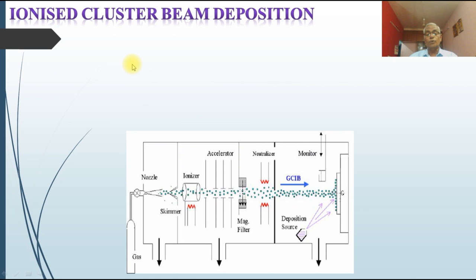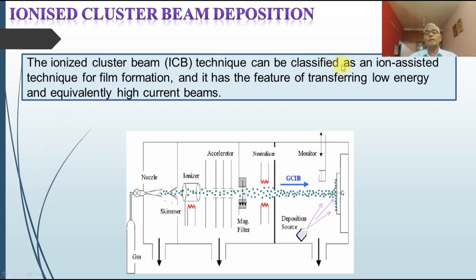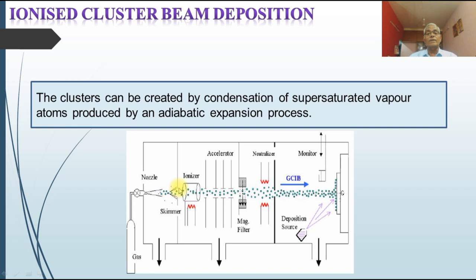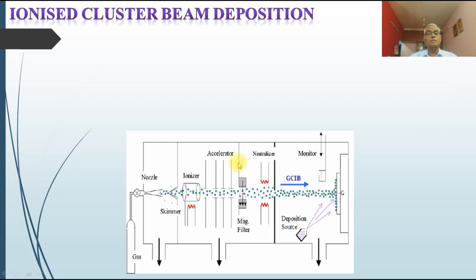The fourth method is ionized cluster beam deposition, which can be classified as ion-assisted film formation. A substrate is used for depositing the film. Gas is allowed to pass through a nozzle, which controls the size of the beam. The gas enters an ionizer, where condensation of supersaturated vapor atoms is produced by an adiabatic expansion process. Once ions are ionized through the ionization chamber, they are accelerated toward the substrate where the film is being formed. A neutralizer is also present in this setup.